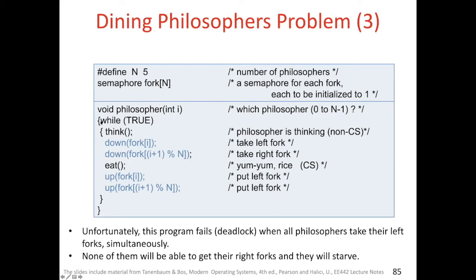There is an infinite loop — while true. In the loop: think, corresponding to the philosopher thinking, which is the non-critical section. Then, to enter the critical section: down fork[I] to take the left fork, and down fork[(I+1) mod N] — the forks are numbered circularly — to take the right fork. After both left and right forks are grabbed: eat, corresponding to the critical section. Then up fork[I] and up fork[(I+1) mod N] to put the left and right forks back. This is the exit code from the critical section.